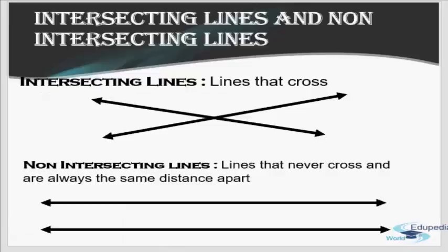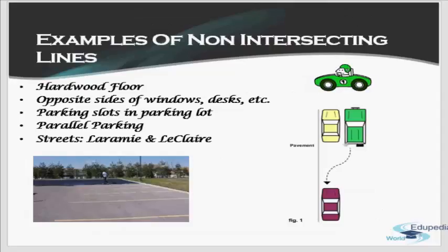Any two lines that cross each other are going to make an angle — that's the definition of intersecting lines. Non-intersecting lines are two lines that don't cross each other, and if they continue to infinity they'll never meet. A real-world example of non-intersecting lines is hardwood floors or the yellow lines in a parking lot — these are examples we can see around us every day.